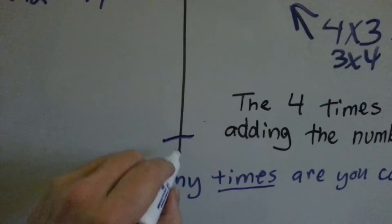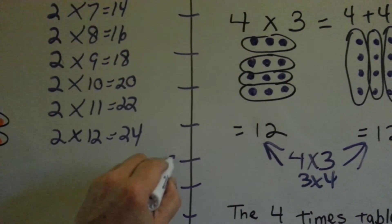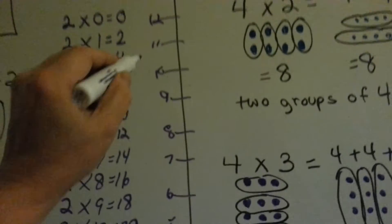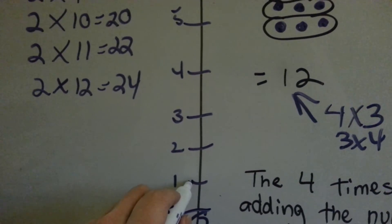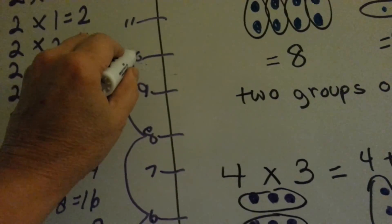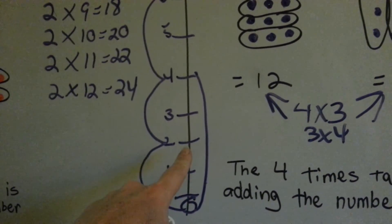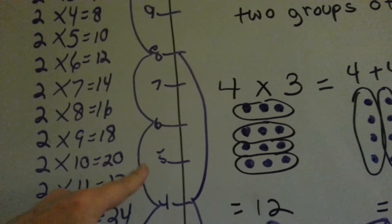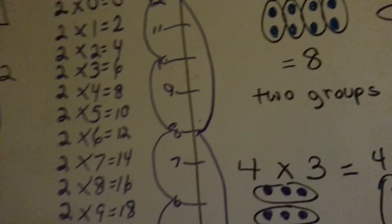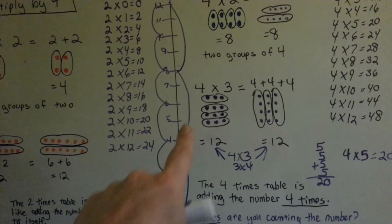So on a number line — 0, 1, 2, 3, 4, 5, 6, 7, 8, 9, 10, 11, 12 — if we skip count by 4s, we go from 0 to 4, then from 4 to 8. We don't stop at 6 because we're going 1, 2, 3, 4 jumps. Then 8 jumps to 12. See how the 2 times table skip-jumps by 2s and the 4 times table skips by 4s.